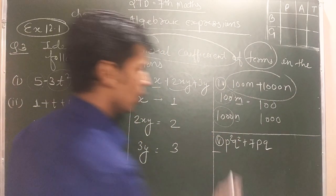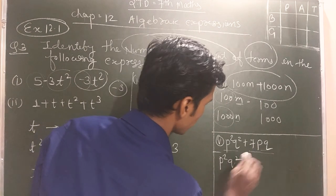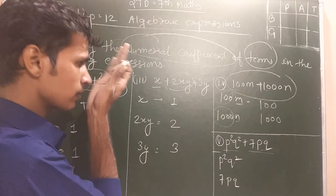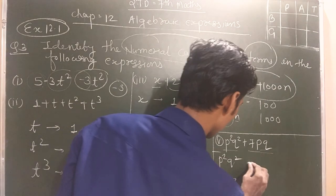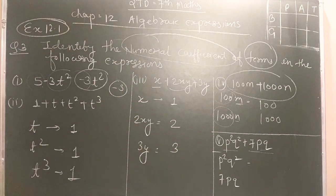Question number five. Two terms: P square Q square and seven PQ. Now student. What is the coefficient? The coefficient. Two.